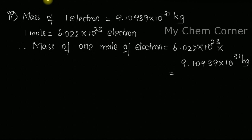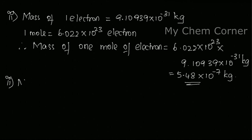When you multiply both of these, you get 5.48×10⁻³¹⁺²³, which gives 5.48×10⁻⁷ kg. So this is the mass of one mole of electrons. The second part is asking about the charge of one mole of electrons.